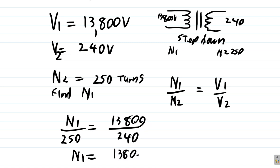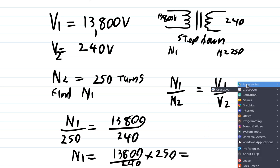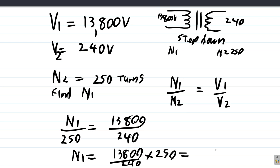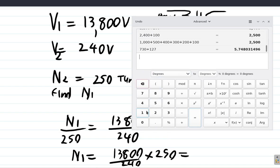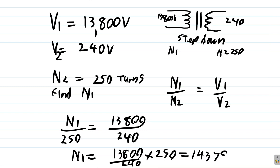So it's 13,800 divided by 240 multiplied by 250. Let's do our calculation. 13,800 over 240 times 250 equals about 14,375. So it would be 14,375 turns.